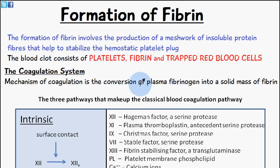We have the formation of fibrin, which involves the production of a meshwork of insoluble protein fibers. These fibers help to stabilize the hemostatic platelet plug. Initially, from the last video, we have a formation of a temporary plug consisting of platelets joined onto the subendothelium via von Willebrand's factor, then they undergo the platelet release reaction, and more platelets join on in a process called secondary aggregation.